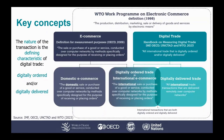So, what is digital trade? The defining feature that makes a trade transaction a digital trade transaction is that it is digitally ordered, digitally delivered, or both. For this reason, digital trade is comprised of two components — digitally ordered trade and digitally delivered trade, as shown on the right-hand side of this diagram. It should be noted that these two components partially overlap, because some transactions are both digitally ordered and digitally delivered.